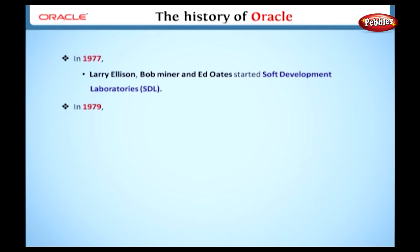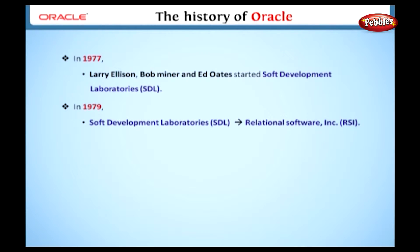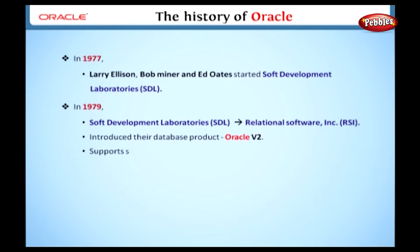Later, in 1979, the name of the company was changed to Relational Software Incorporated, and they introduced their database product called Oracle V2. This version supports simple SQL operations alone.